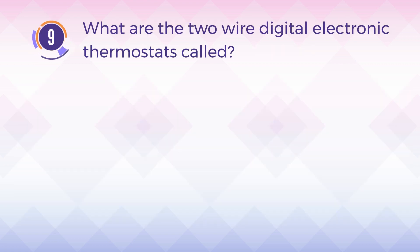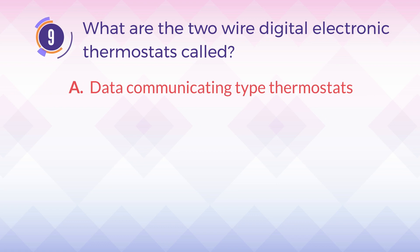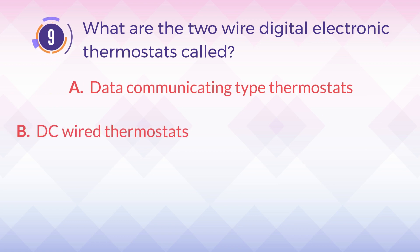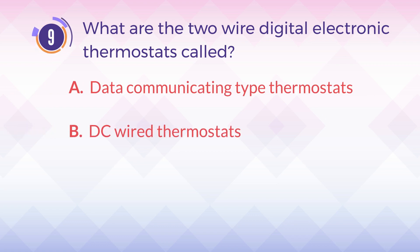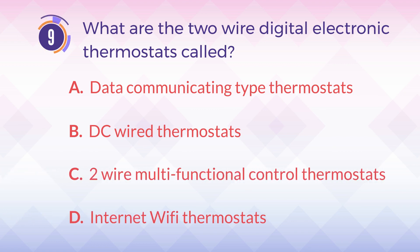Number 9. What are the two-wire digital electronic thermostats called? A. Data communicating type thermostats. B. DC wired thermostats. C. Two-wire multi-functional control thermostats. D. Internet Wi-Fi thermostats.